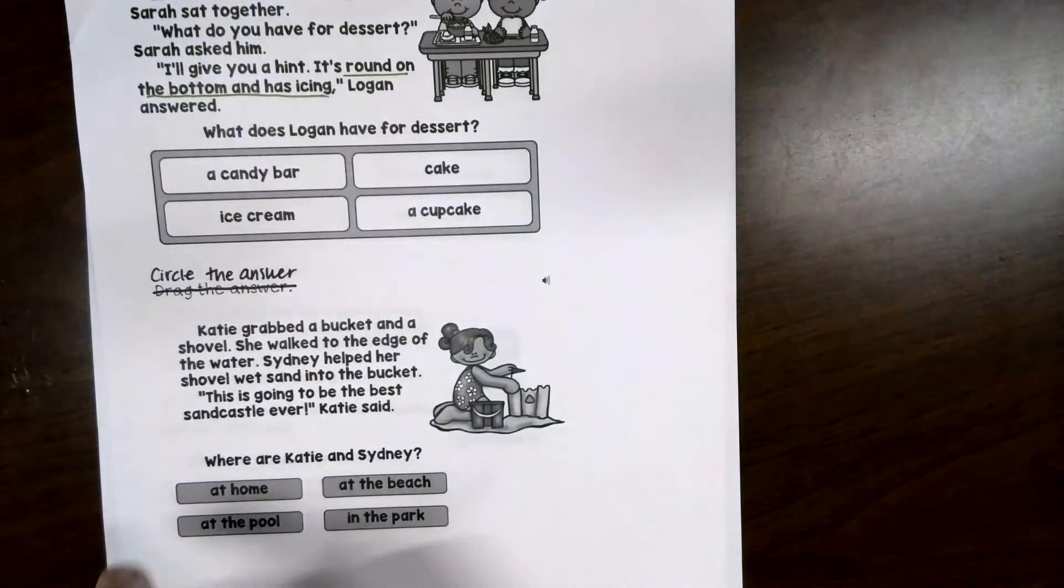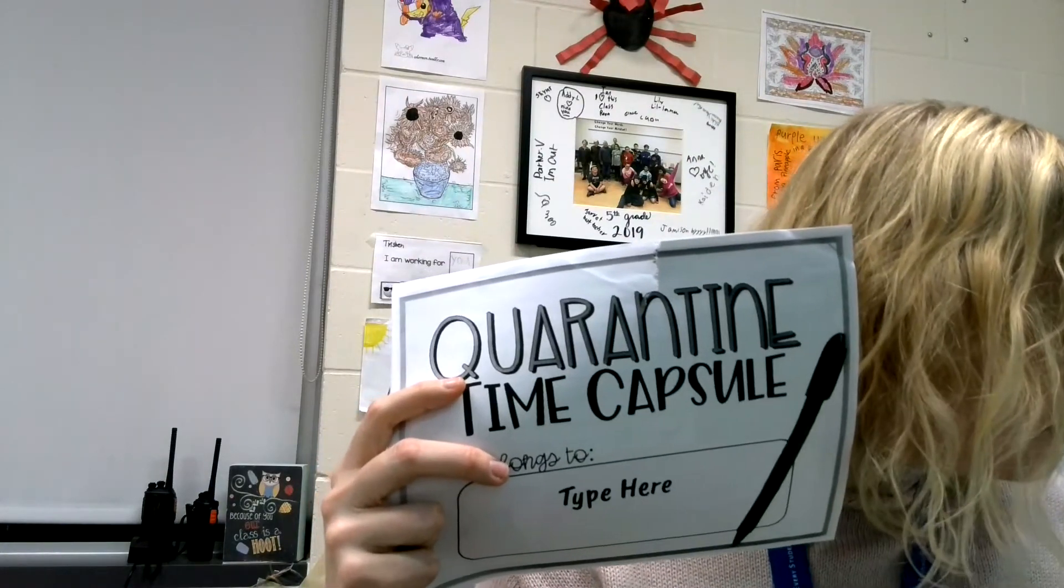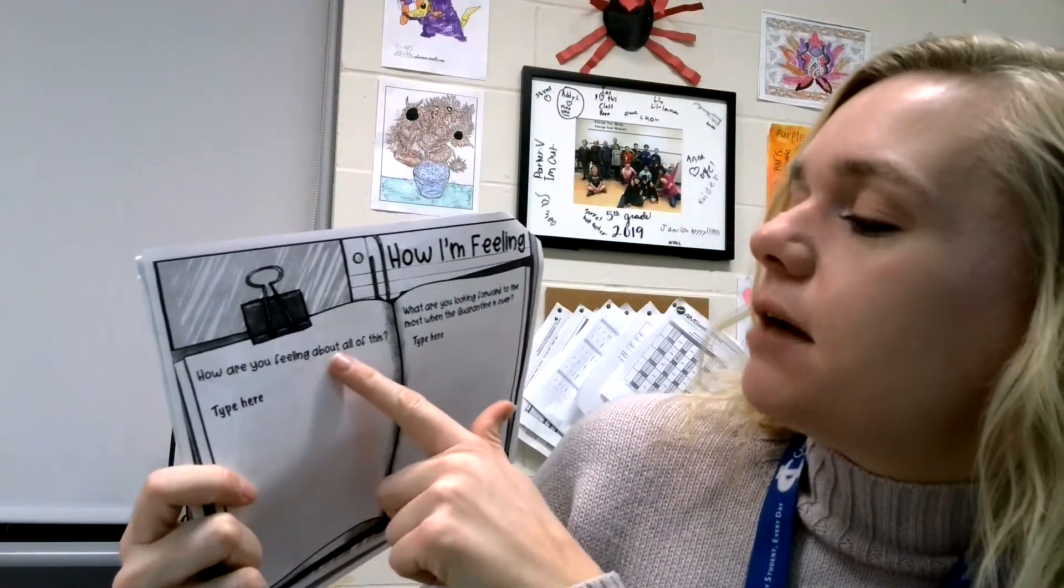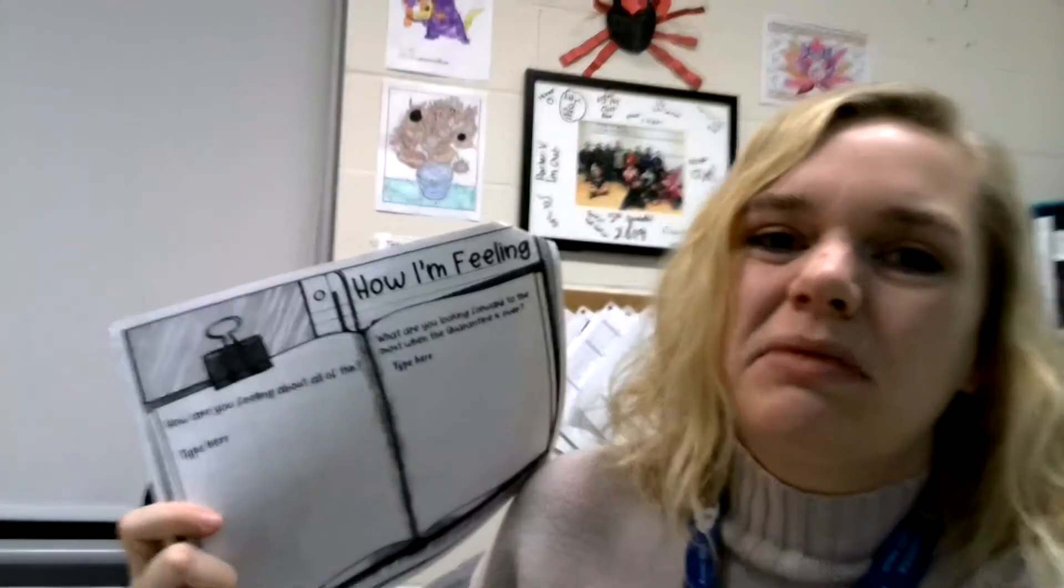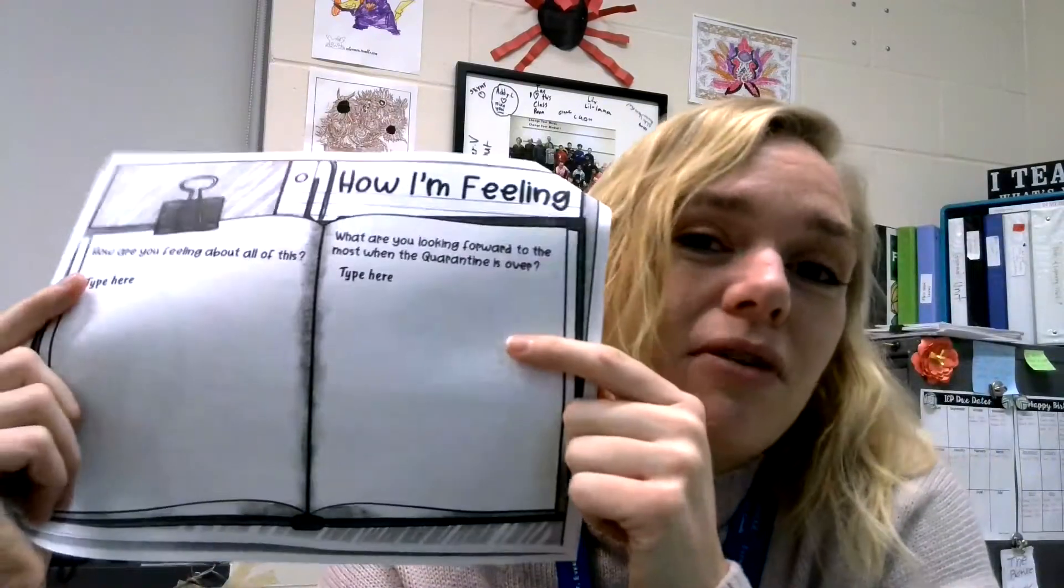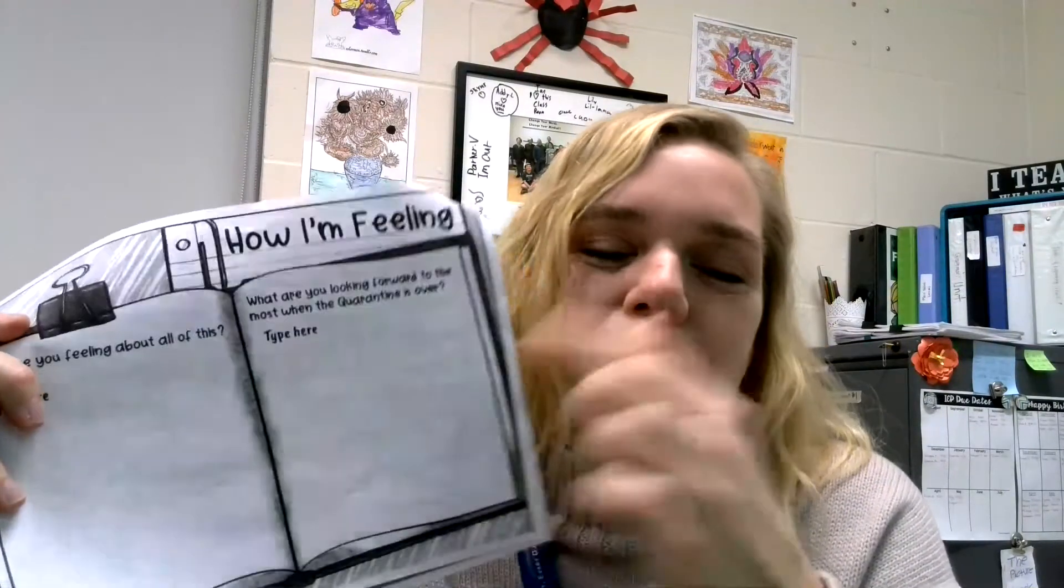Once you finish those four questions, you do need to do a little work in your quarantine packet. I'm going to turn the camera so you can see me again. So in your quarantine time capsule, I'm just peeking to see which one we need to do. You need to do the How I'm Feeling page. How I'm feeling. Your first question is, how are you feeling about all of this? How are you feeling about quarantine and pandemic and COVID? Write your feelings here. And then, what are you looking forward to most when quarantine's over? What are you excited for when it's over? I'm excited for everyone to be back at school and to see everyone again. But what are you excited for? So those are the two questions that you need to do. Or the page you need to do.